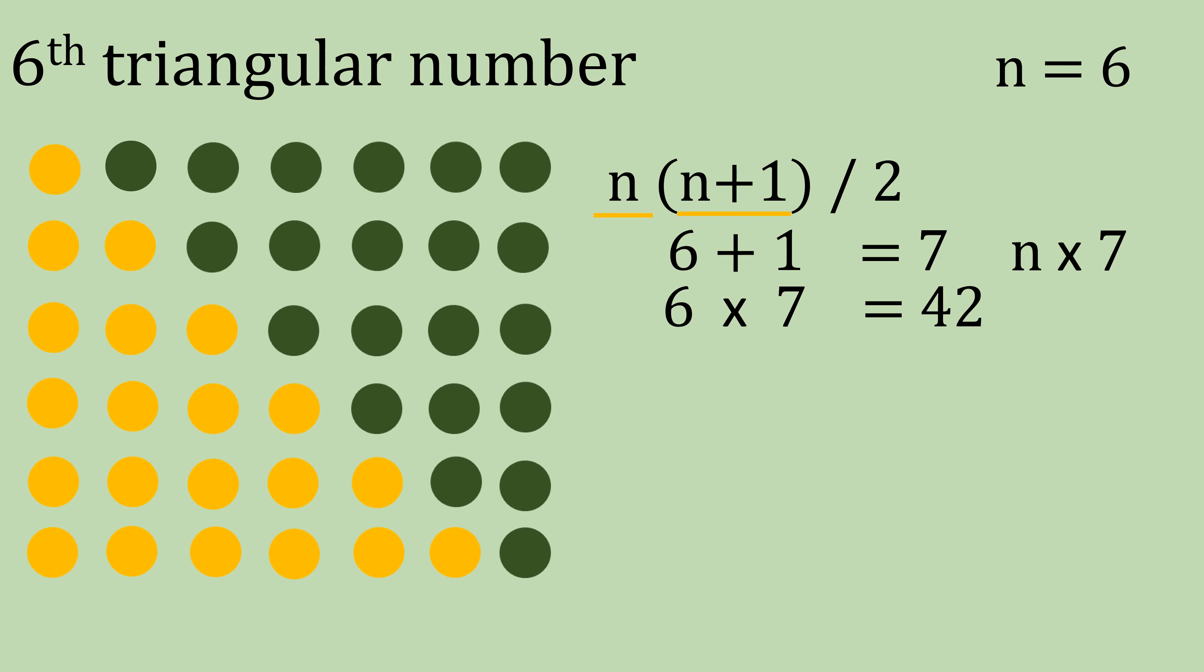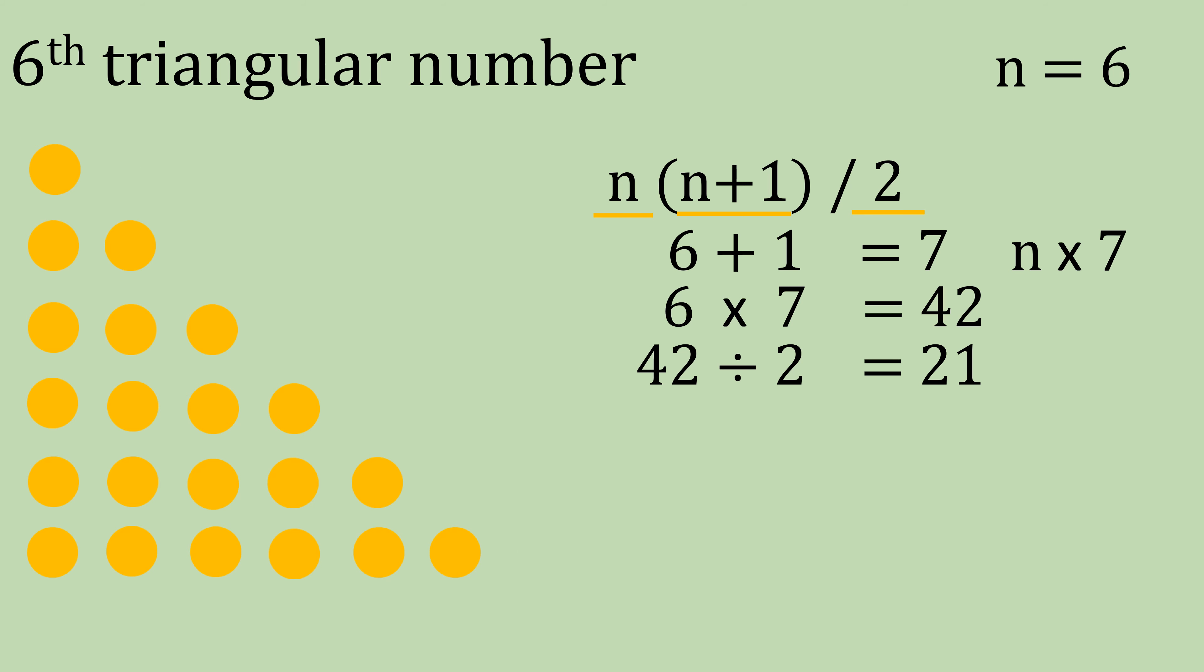So hopefully that was nice and easy. Let's try for the sixth triangular number. OK, then n equals six, brackets, six plus one is seven. Then we're going to do n times seven, which is going to give us 42. And then 42 divided by two is 21. And you can see those dots again to prove our theory. So the sixth triangular number is 21.